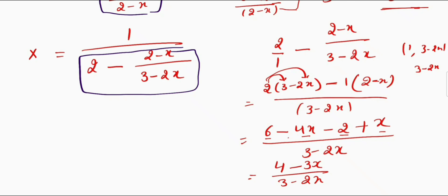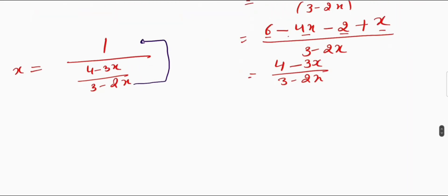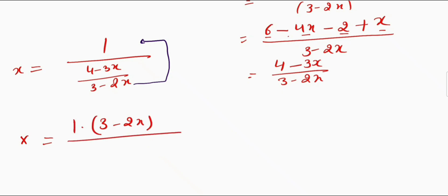Now I will put this value into my equation. So I get x is equal to 1 divided by 4 minus 3x divided by 3 minus 2x. The next step is to take 3 minus 2x up, so I get x is equal to 3 minus 2x divided by 4 minus 3x.